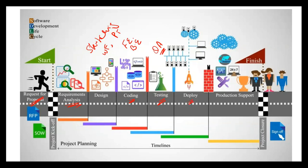Then comes the Deployment phase, where you release your application into the market. You provide it to a bunch of users and potential customers. After getting their feedback, you release it on the App Store, iOS application store, or as web apps. Once released, comes the Maintenance phase, where you keep fixing bugs, adding more functionality, and providing after-sale support. That's how the entire software gets developed, and every stage has a defined set of parameters and procedures. The timeline runs from project kickoff to project closure.